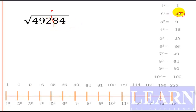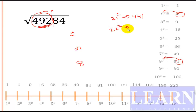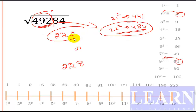The last problem is 49284. The last digit is 4, so the square root ends with 2 or 8. The first part is 492. We know 21 squared is 441 and 22 squared is 484. Since 492 is just greater than 484 and very close to 484, we take 22. The answer is 222.